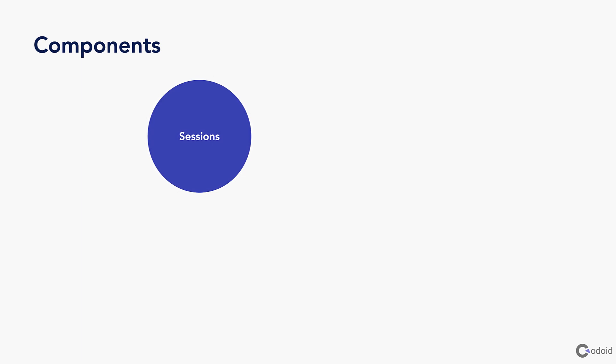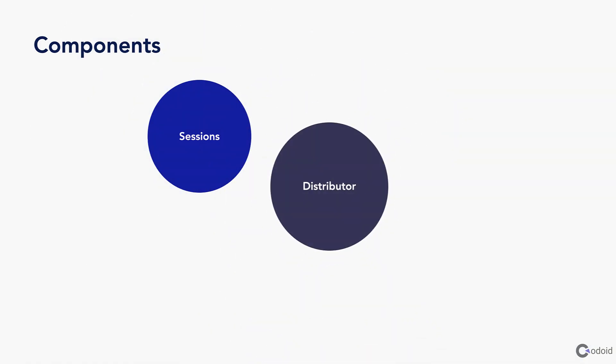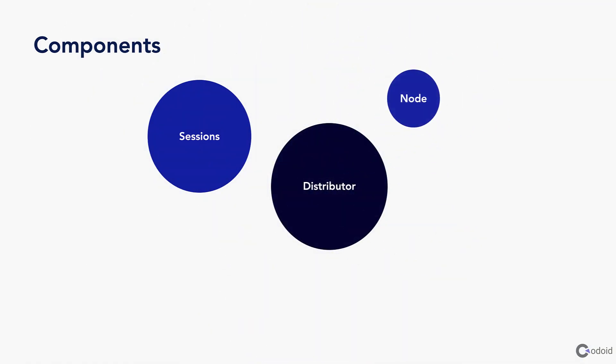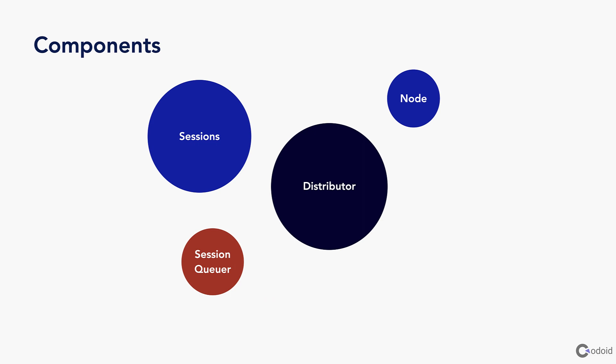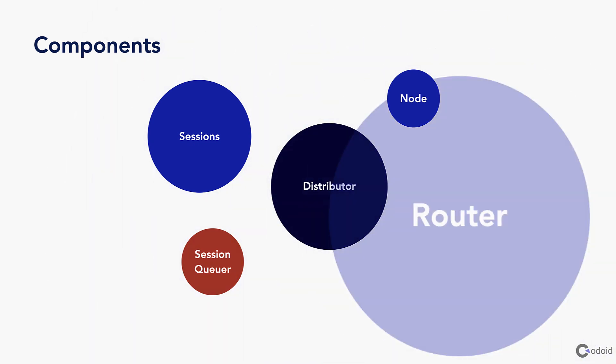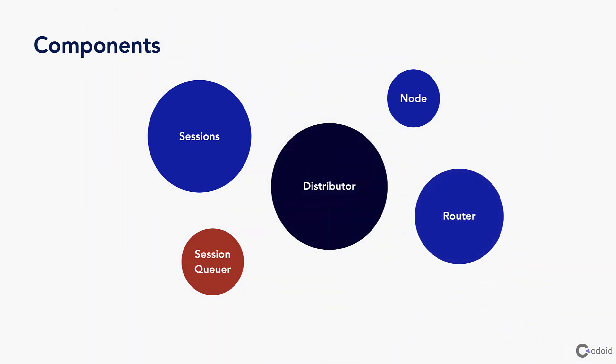Distributed execution has several components: the first one is sessions, distributor, node, session queueer, and router. You are going to see what the purpose of each component is and how it works.